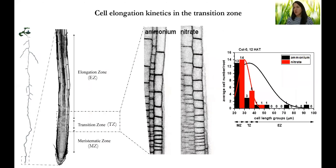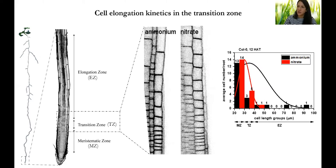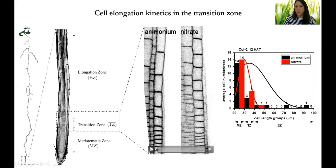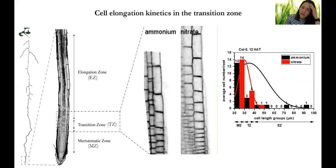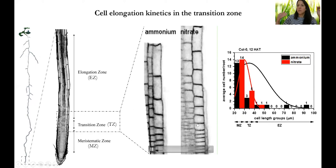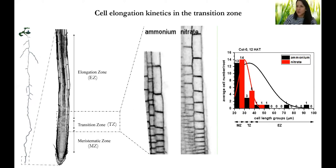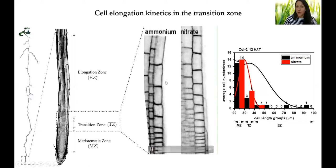But what is root growth? Root growth equals cell elongation plus cell division. Because cell elongation is a much quicker process than cell division, we focused on the cell elongation profiles of individual cells in the transition zone — the zone where root cells start to elongate. Comparing cell behavior on ammonium and nitrate, we can clearly see that on the nitrate-grown media, more cells start to elongate compared to cells grown on ammonium.